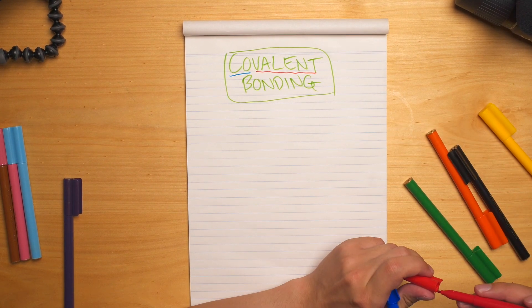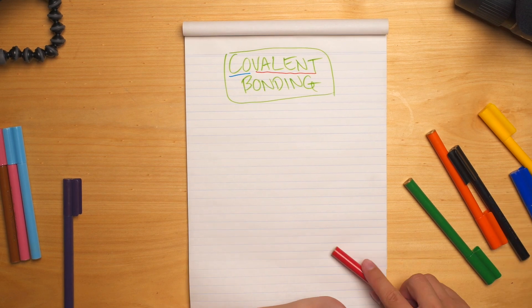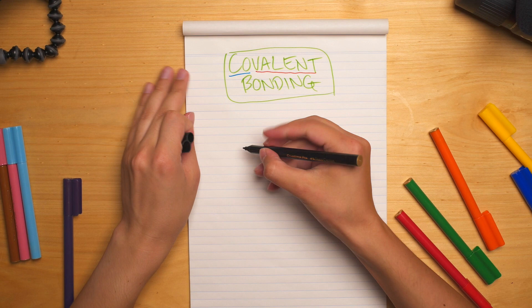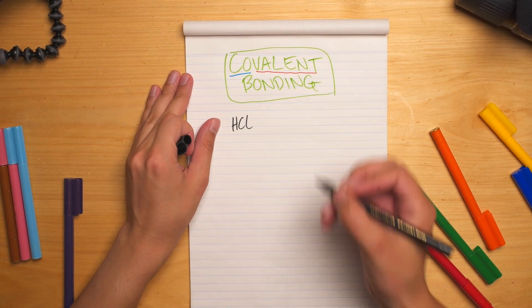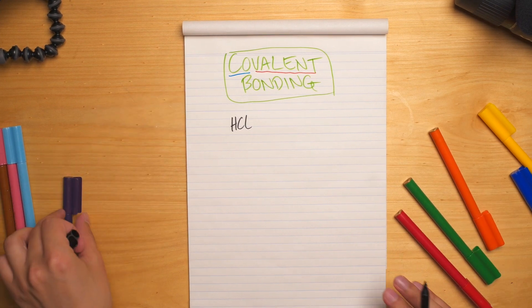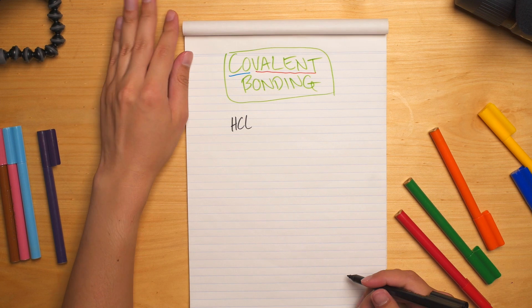Covalent bonds are shared electrons. And what happens here, so if I draw a very simple example, I'm going to draw hydrogen chloride and we're going to draw it. When you do this process you will develop some understanding of its shape. I'm going to show you the basic way of doing it.